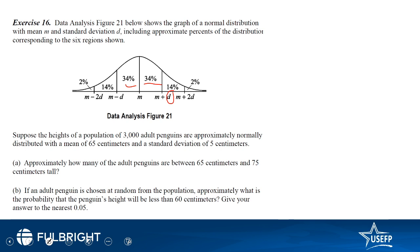Beyond two standard deviations from the mean, only 2% of the data lies. It's very important to remember this shape of the distribution: 34% within one standard deviation, 14% between one and two standard deviations, and 2% beyond two standard deviations. Now for the question: suppose the heights of 3000 adult penguins have a mean of 65 centimeters and a standard deviation of 5 centimeters. So M = 65 and D = 5.